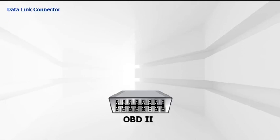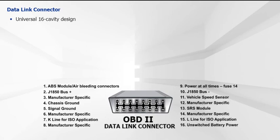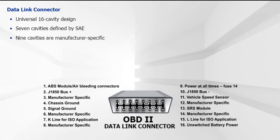The greatest benefit of OBD2 standardization is the universal diagnostic connector used for scan tool communication. Known as the data link connector, or DLC, this is a 16-cavity design complete with power and ground circuits at pins 4 for ground and 16 for B+. These circuits eliminate the need for a separate power cable when connecting a scanner. According to OBD2 regulations, 7 cavities in the DLC are defined by the SAE and are common to all vehicles, while the remaining 9 cavities are reserved for the discretionary use of the vehicle manufacturer.